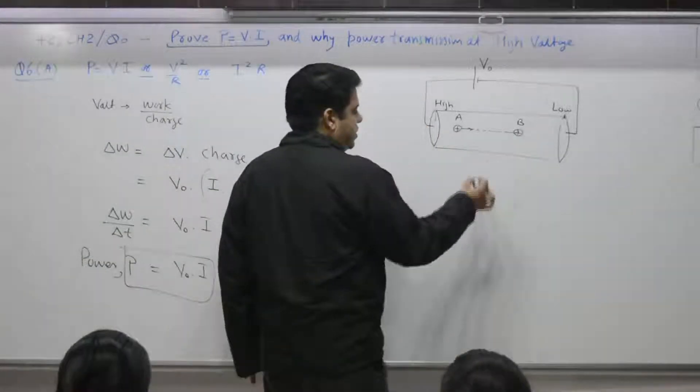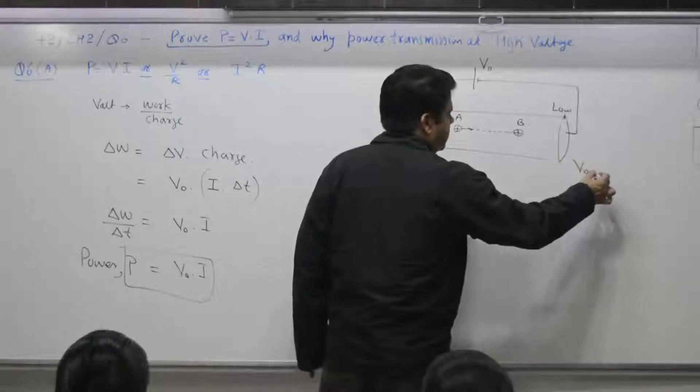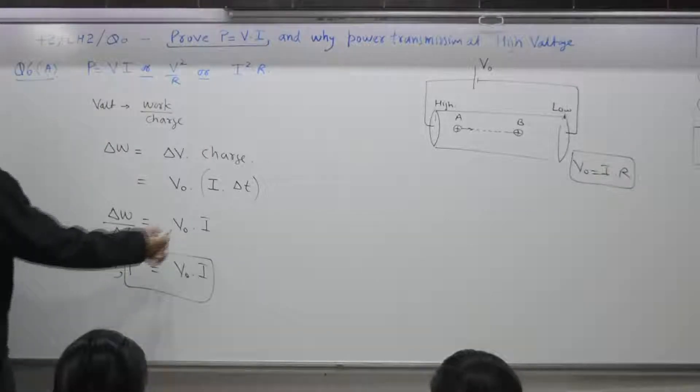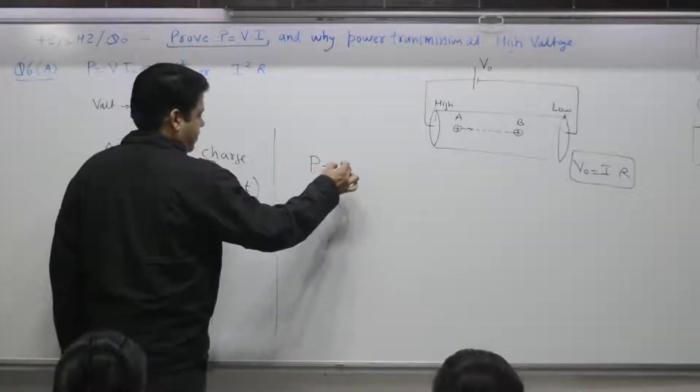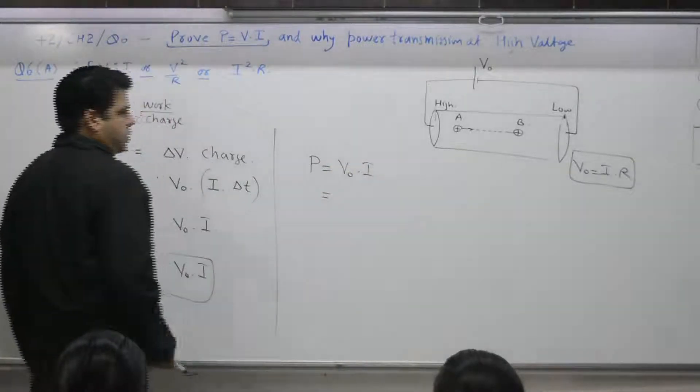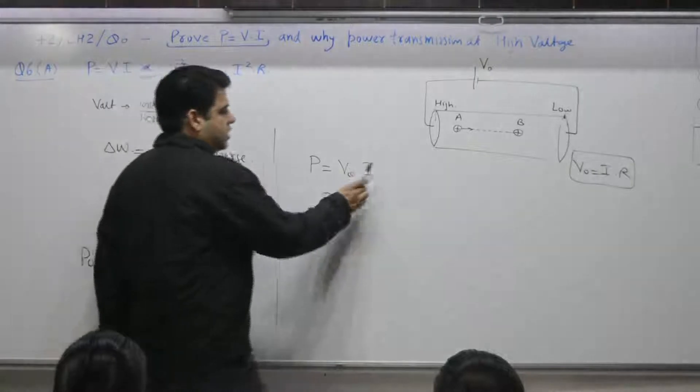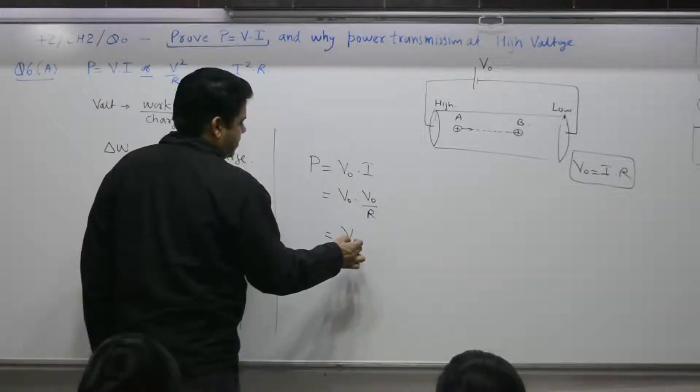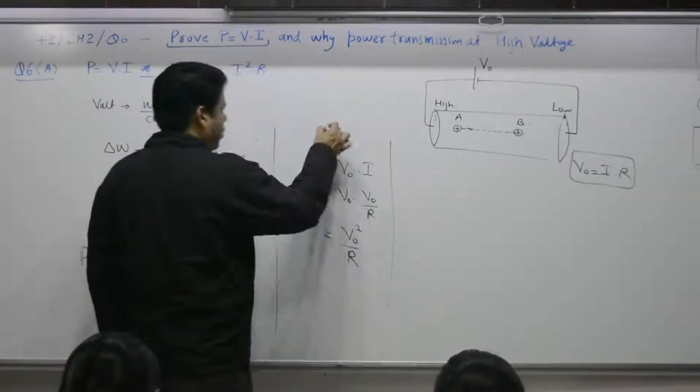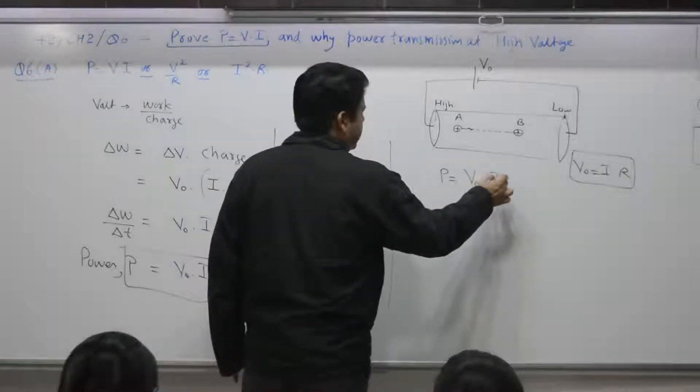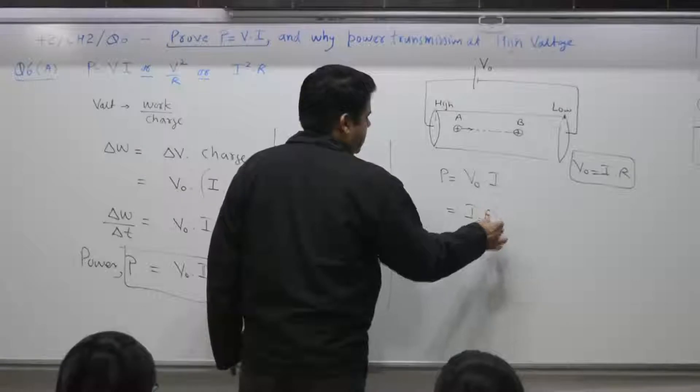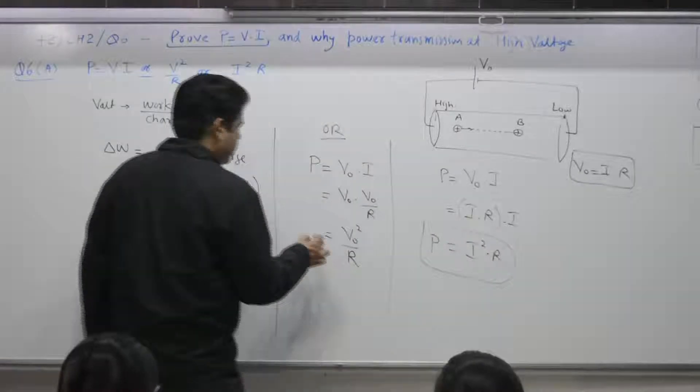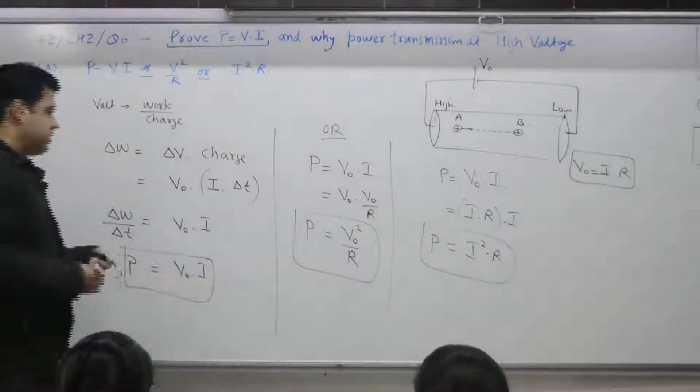Ohm's law. If the resistance of the wire is R, then V naught is equal to what? V naught is equal to IR. You can change this expression. How? P you have written V naught into I. If you want to write everything in terms of V, then I is equal to what? V naught by R. What you get is? V naught square by R. Or P is equal to what? V naught into I. So P is equal to V naught by R.